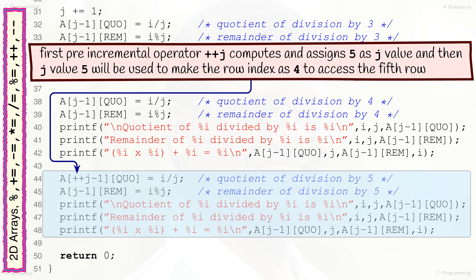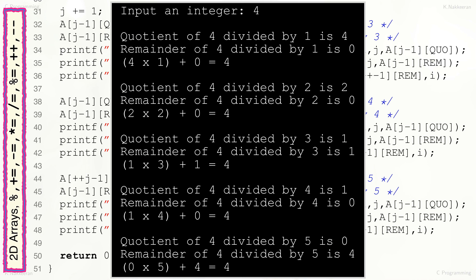Similar to post and pre-incremental operators, C programming language also has post and pre-decremental operators, written as --. These work similarly to the incremental operators except they decrement the associated integer variable value by 1. The display of execution of the .exe file with input integer 4 and the final output are shown in the inset window.